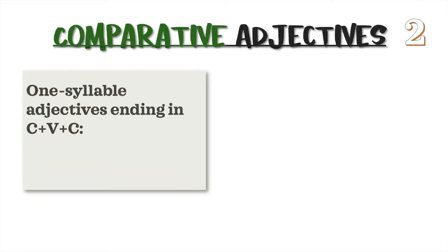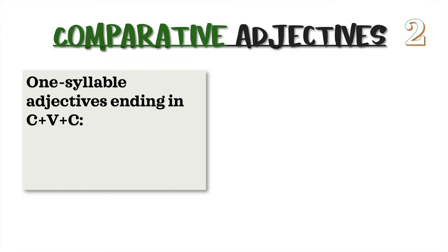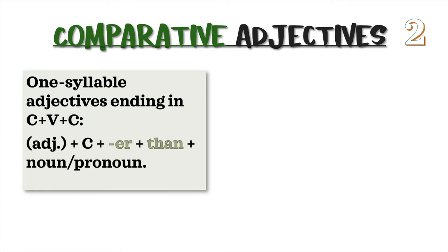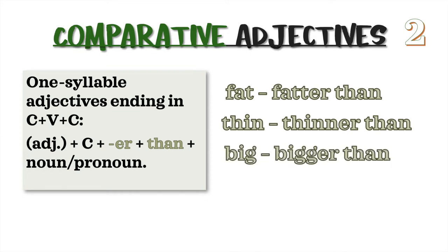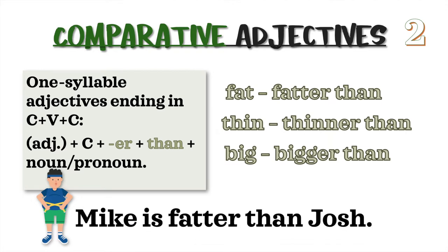Rule 2: One syllable adjectives ending in consonant-vowel-consonant. We add another consonant to the adjective, then -er, then than, plus noun or pronoun. For example: fat → fatter than; thin → thinner than; big → bigger than. Notice the last consonant is doubled: double t, double n, double g. Example sentence: Mike is fatter than Josh.